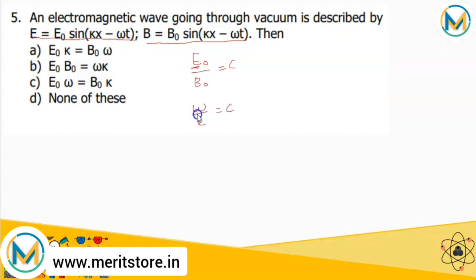The speed of the wave is related to frequency and wave number as ω/k = c, where ω is the angular frequency (2π/T) and k is the wave number (2π/λ). Combining the two relations ω/k = c and E₀/B₀ = c, we get ω/k = E₀/B₀. Cross-multiplying gives E₀k = B₀ω. Looking at the options, the correct answer is option A: E₀k = B₀ω.